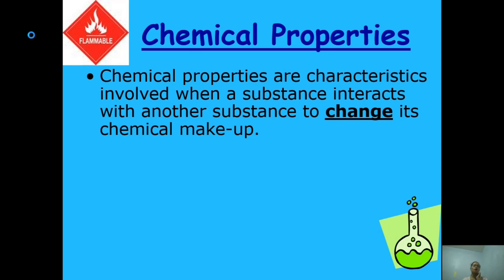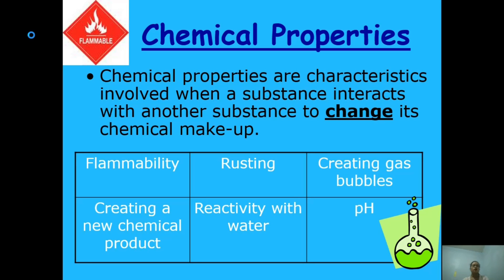Chemical properties are characteristics involved when a substance interacts with another substance to change its chemical makeup. These include flammability, rusting, creating dust bubbles, creating a new chemical product, reactivity with water, and pH. Chemical properties represent a kind of change which produces another substance or creates a new product, and are most evident when a certain material chemically reacts with another material.